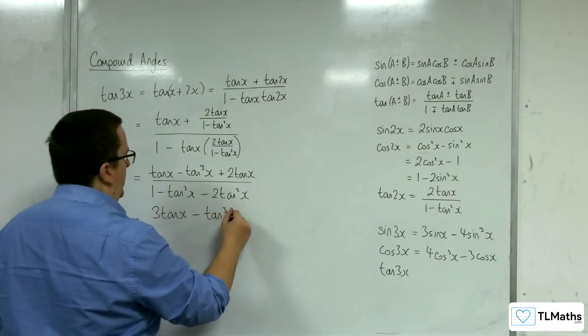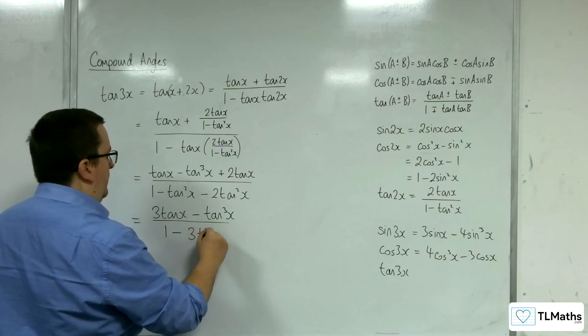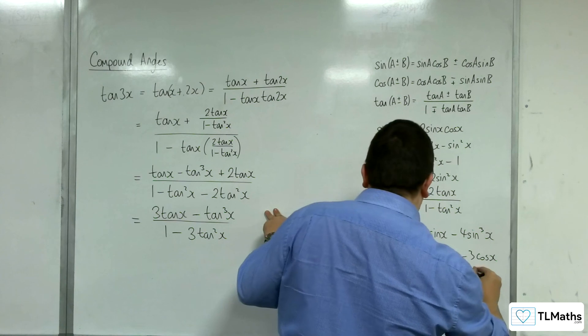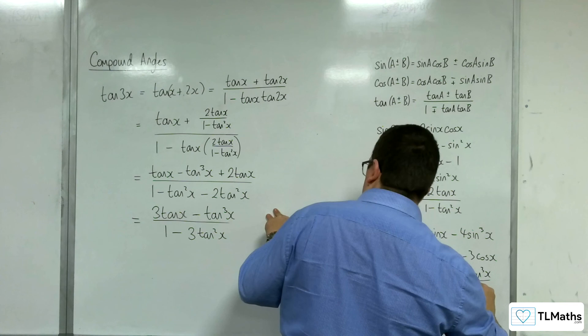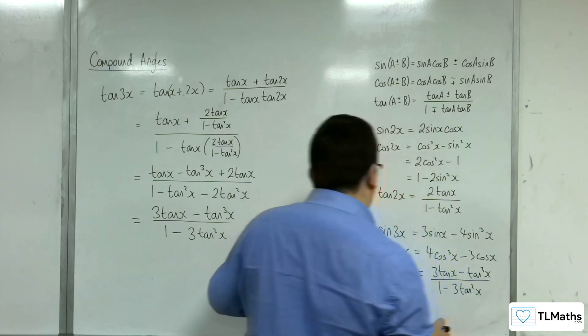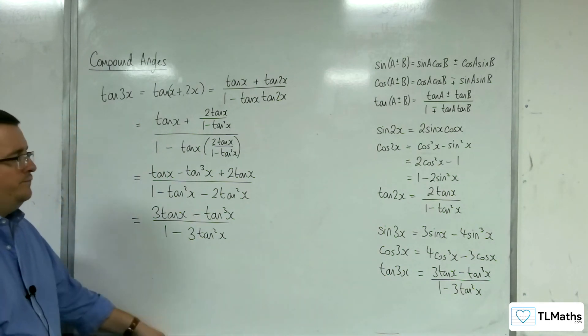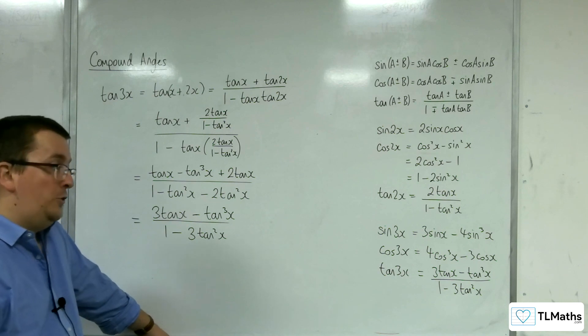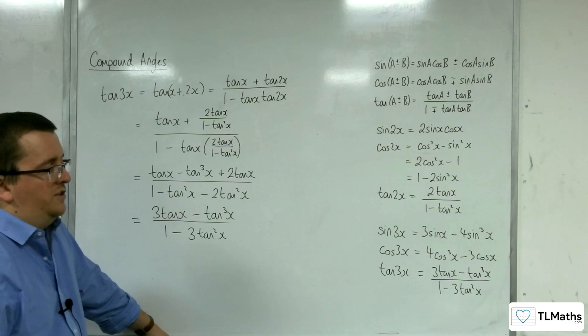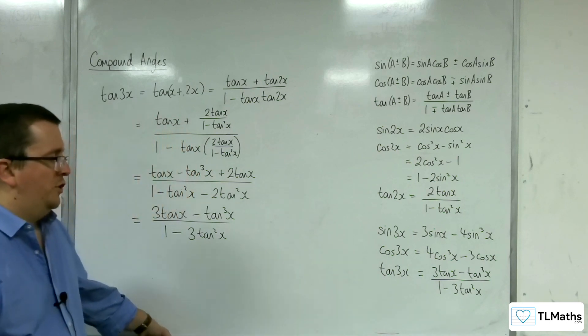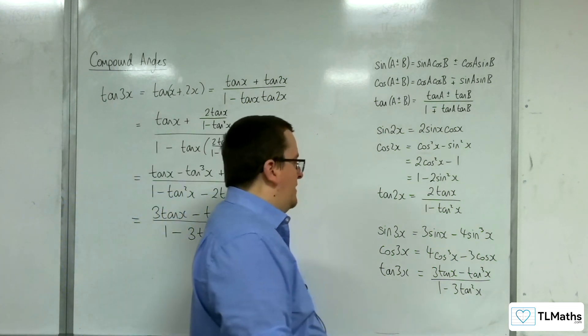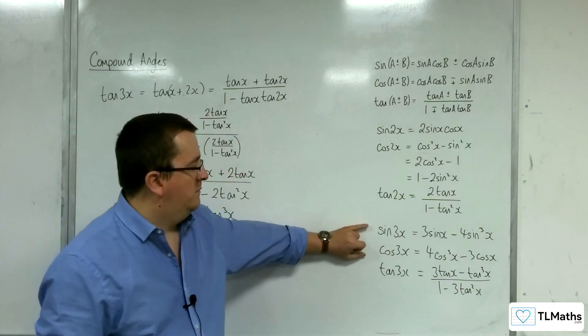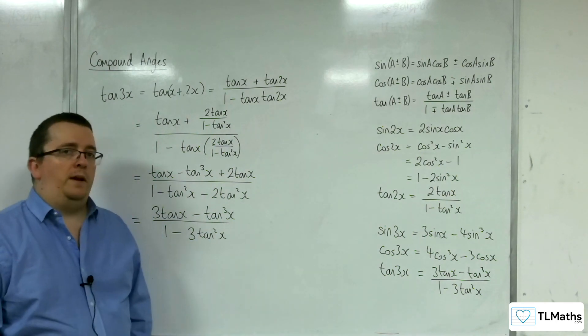Take away tan cubed x over 1 minus 3 tan squared x. So, I mean, looking at that, there's not a whole lot you could really do with the tan 3x formula. It's pretty mucky. So it's not really something you would use for integration purposes because just rearranging this to get tan cubed, you'll get something really messy, which would be very tricky to integrate. OK. So these two are useful. They have their uses. This one, not so much.